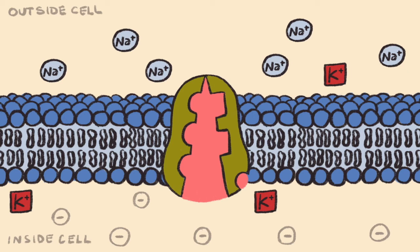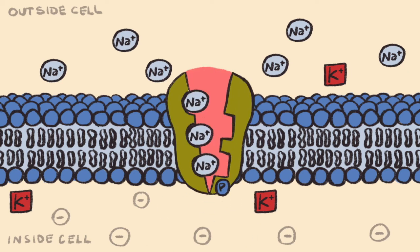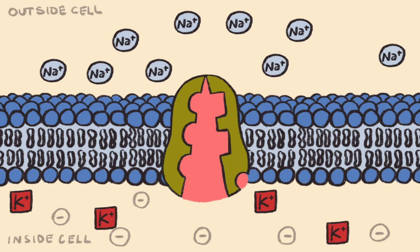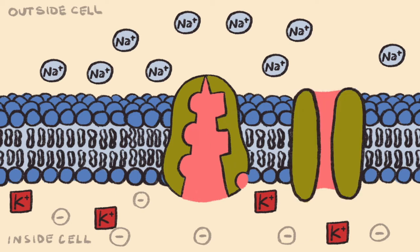While sodium-potassium ATPase pumps drive the creation of the negative 65 millivolt resting membrane potential, potassium leak channels contribute to the maintenance of this membrane potential. Potassium leak channels allow potassium ions to slowly leak out of the neuron, down their electrochemical gradient, back into the extracellular environment from which they were originally pumped.